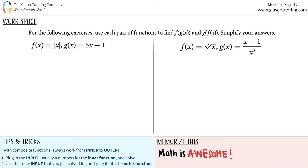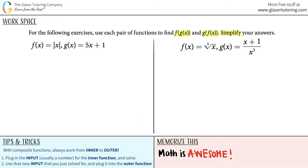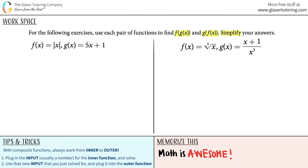For the following exercises, use each pair of functions to find f of g of x and g of f of x, and then simplify the answers. We have two different pairs of functions here — this pair with f and g of x, and this pair with f of x and g of x as well. For both of these we have to find the composite functions f of g of x and g of f of x.